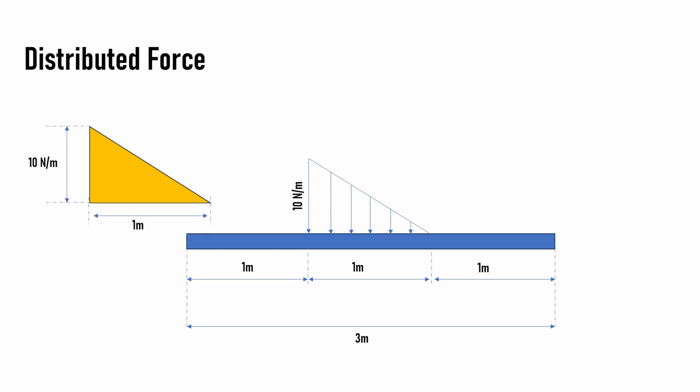As we can see from the figure, the length of this triangle is 1 meter because the distributed force is acting only on a 1 meter length, and we have a peak of 10 Newton per meter. That is the height of that force. We just find the area of that particular triangle, which is half times height times base. As you can see here, meter and meter cut out and only Newton is left.